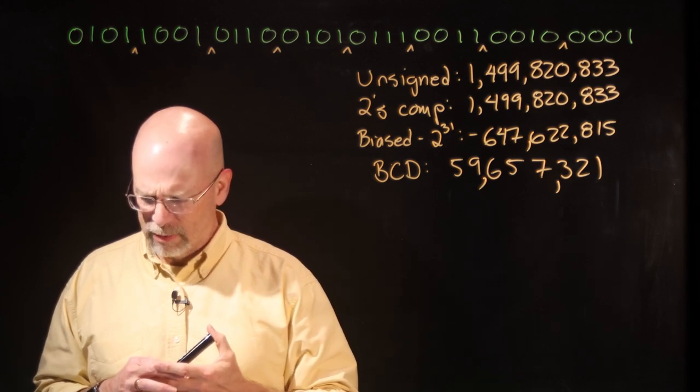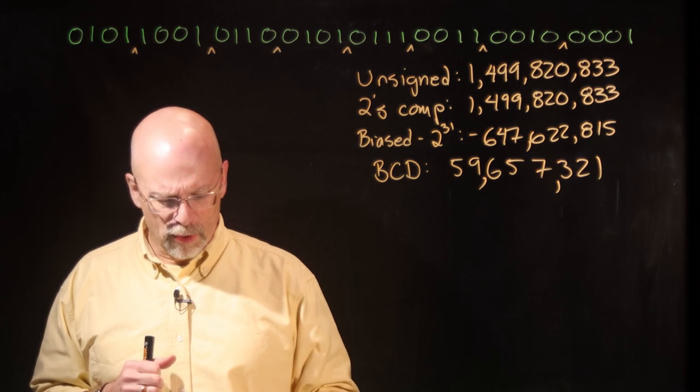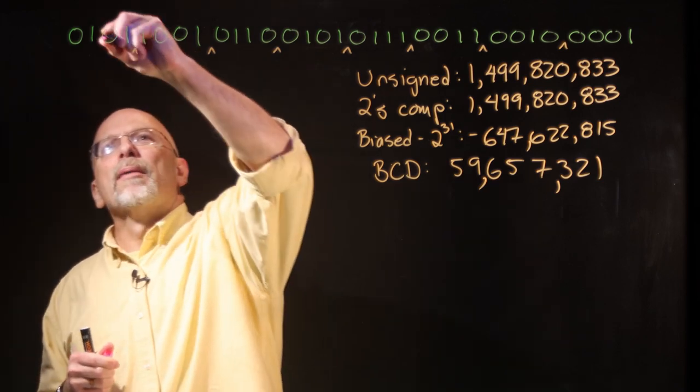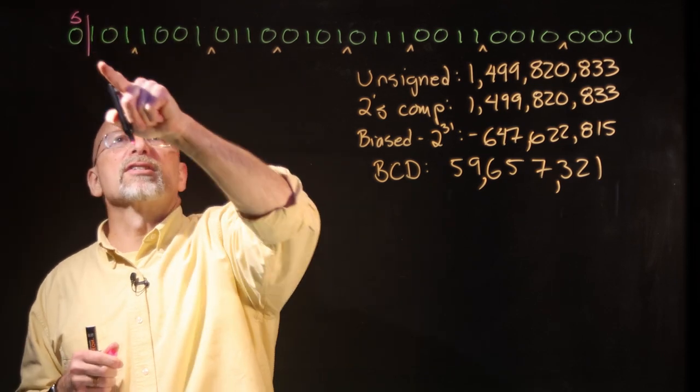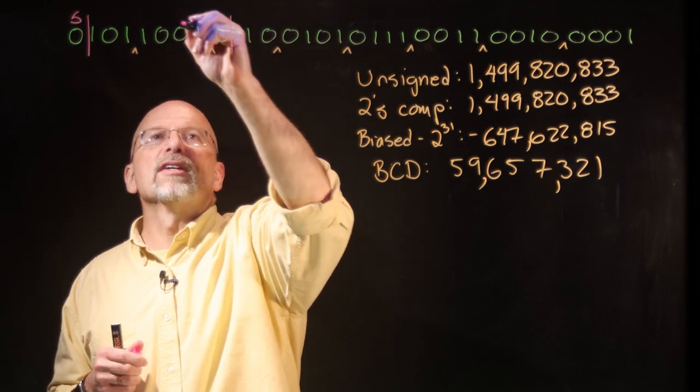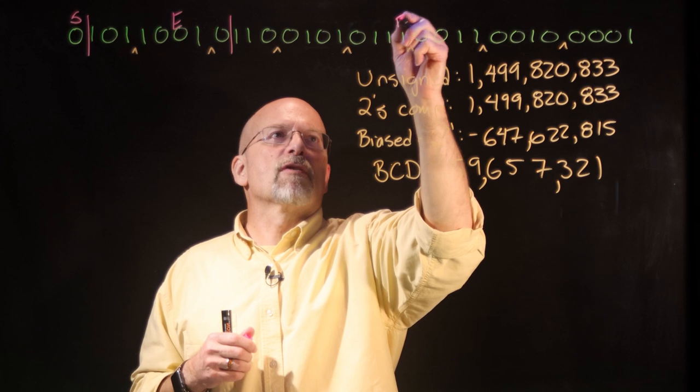What else could this be? Turns out, could be IEEE 754 floating point notation. And if that's the case, well, remember, this is our sign bit, S. The next eight bits, this is our exponent. And then the rest of it, this is our fraction.